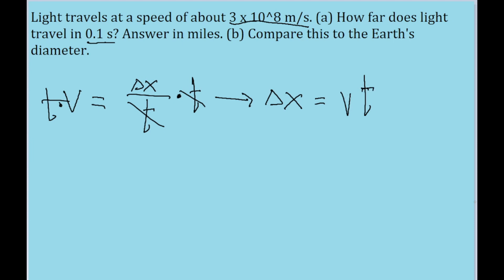We're given both these things. The speed of light we're given is 3 times 10 to the power of 8 meters per second, and the time is 0.1 seconds. If we put this into our calculator, or if you just decide to do it in your head by noticing that multiplying something by 0.1 is just going to decrease its order of magnitude by 1, then we find that the new distance is equal to 3 times 10 to the power of 7 meters.